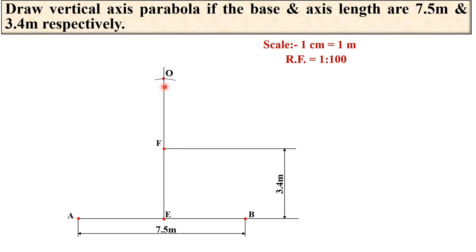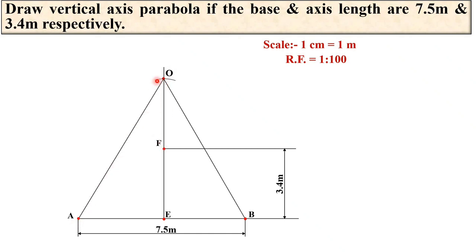Now join O to A and O to B. Here you can see this forms a triangle, which is why this method is sometimes also known as the triangle method for the parabola.